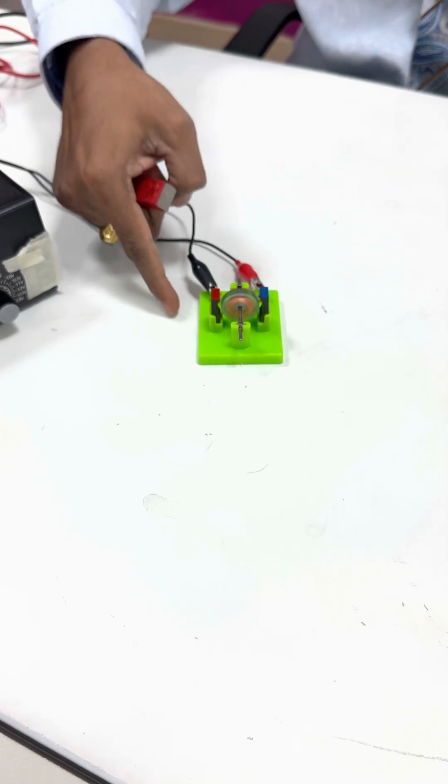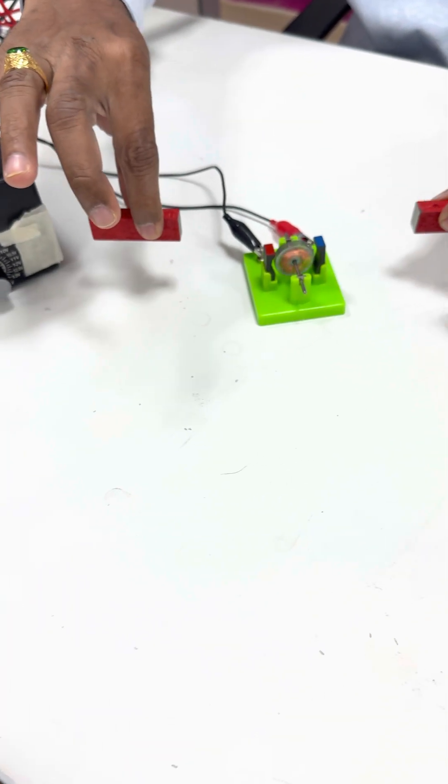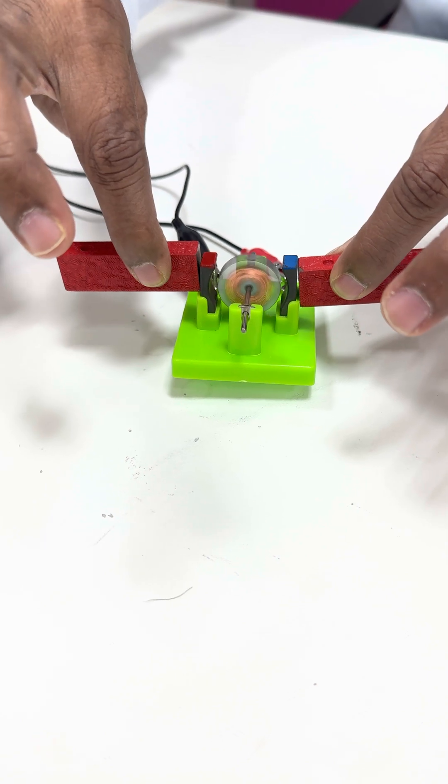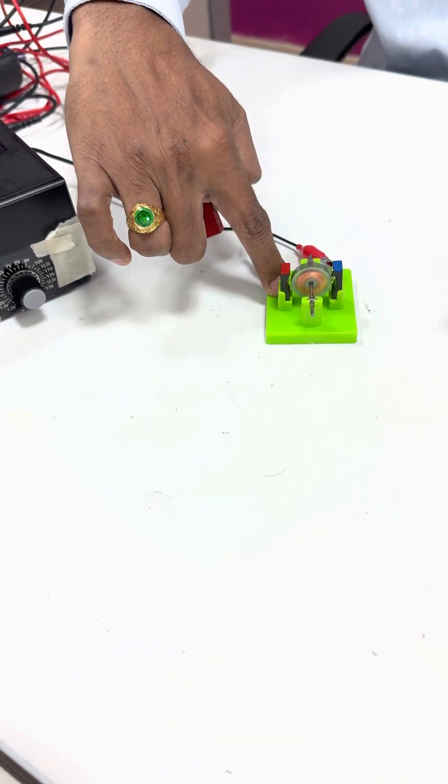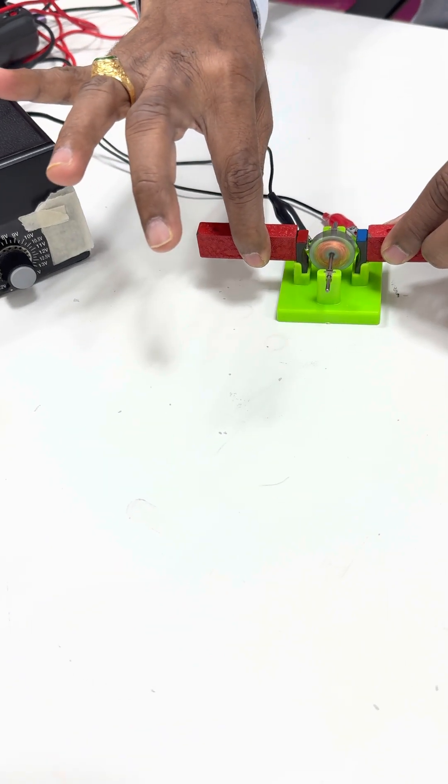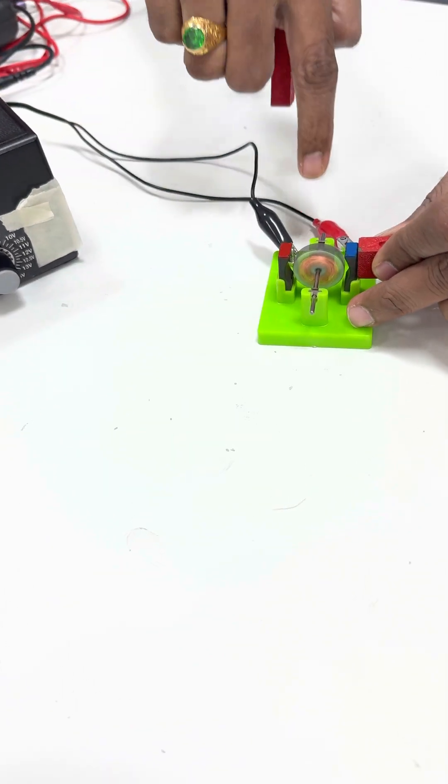Now I remove, the speed is very less. If I bring magnet, you can see, it's rotating at high speed. And then if I remove, it's rotating with slow speed. Now if I bring magnet, the speed is increasing.